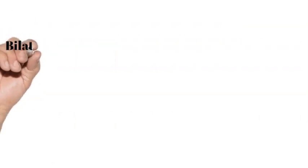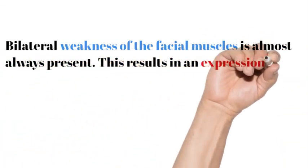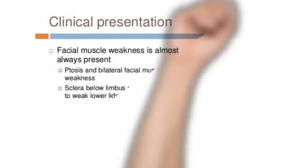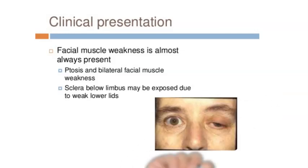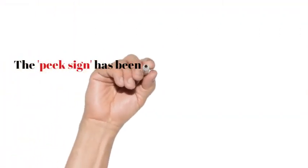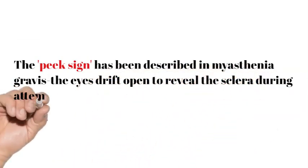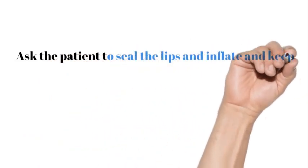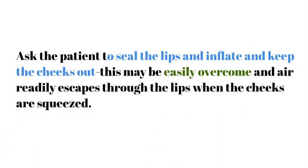Bilateral weakness of the facial muscles is almost always present, resulting in an expressionless face. It is important to demonstrate facial weakness by testing the facial muscle groups. Ask the patient to close the eyes — the eyelashes will not be buried. Demonstrate weakness of eye closure by asking the patient to close the eye tight; this can be easily overcome using your finger and thumb. The peak sign has been described in myasthenia gravis — the eyes drift open to reveal the sclera during attempted eye closure. Ask the patient to seal the lips, inflate, and keep the cheeks out; this may be easily overcome, and air readily escapes through the lips.